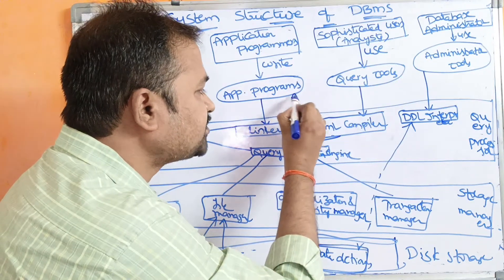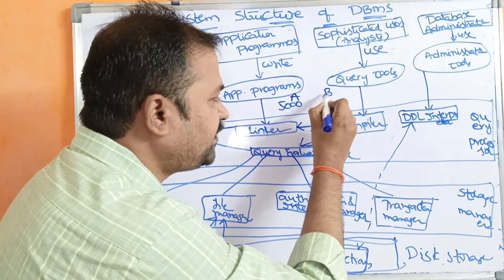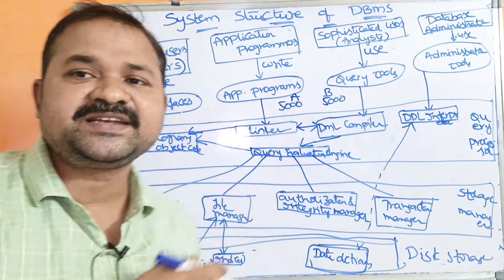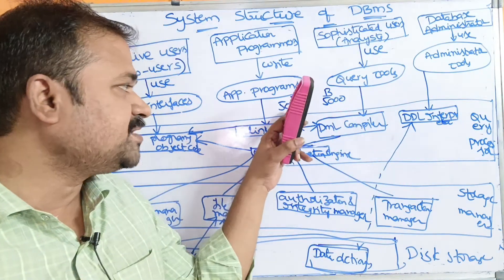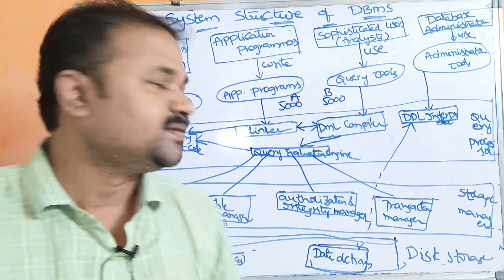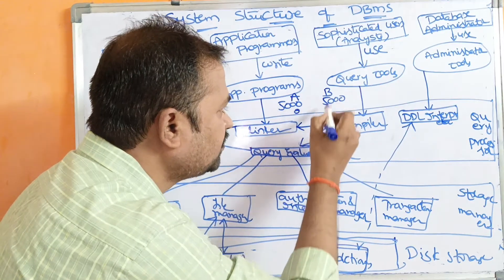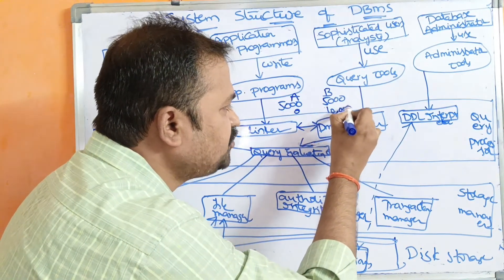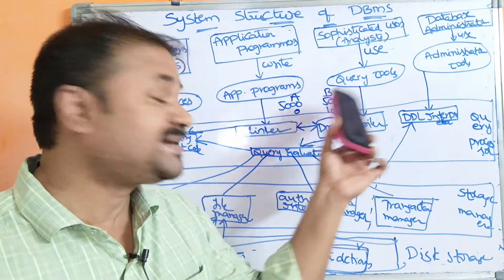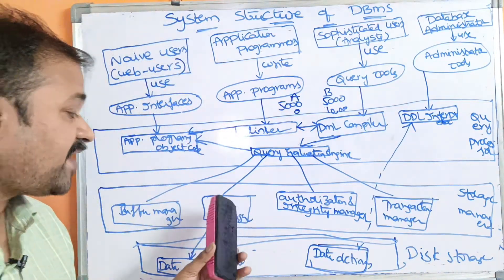For example, let person A have 5000 rupees and person B also have 5000 rupees. If person A transfers 5000 rupees from their account to account B, then after the transaction, person A's balance should be 0 and person B's balance should be 10,000. During system failure also, the DBMS has to produce the correct results. That is the role of the transaction manager.